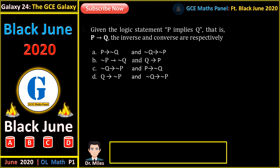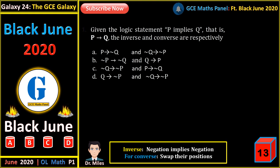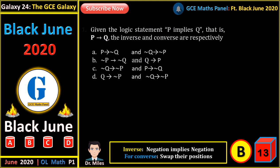Given the logic statement P implies Q, the inverse and the converse are respectively: the inverse is given by negation of P implies negation of Q. For the converse, we swap their positions. So the alternative here is B: negation of P implies negation of Q, and Q implies P as the converse.